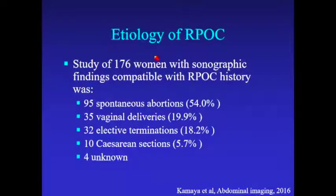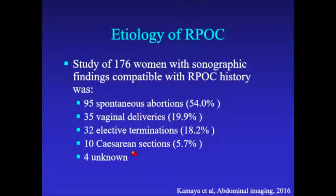Here's a study of 176 women with sonographic findings of retained products. Looking at the history: 54% had spontaneous abortions, 20% vaginal delivery, 18% elective terminations, and 6% C-section. That 6% for C-sections is actually a pretty high number.